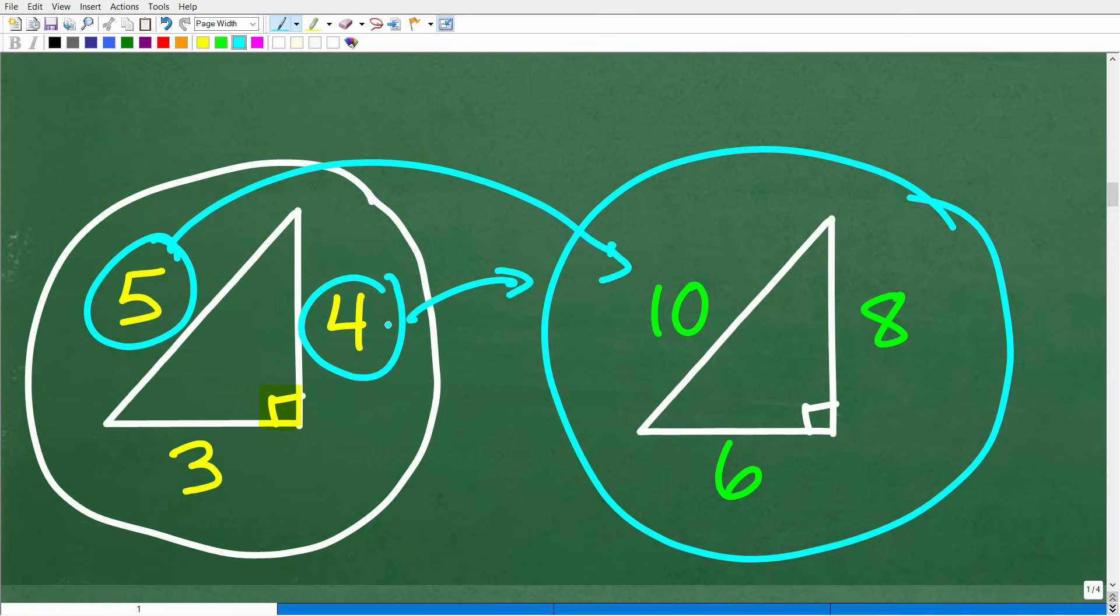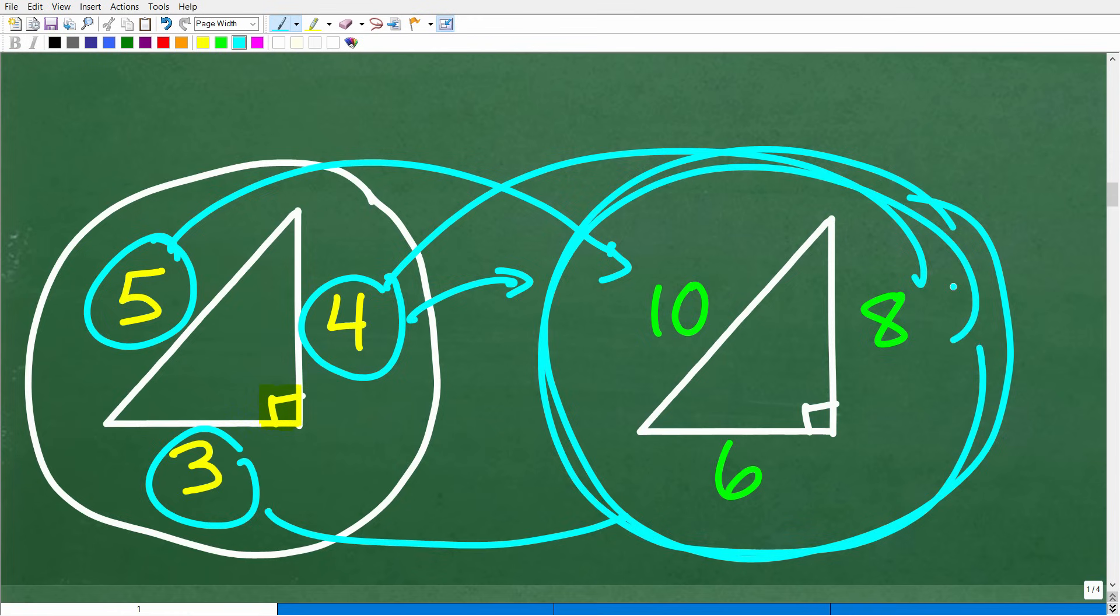So instead of five, we'll just double that. So that'd be 10. And then instead of four, we'll double that, that'd be eight. Instead of three, we'll double that, that'd be six. This triangle right here is also square. So any triangle that's proportionate to three, four, five, is also going to be square.